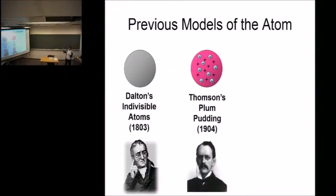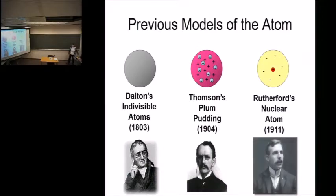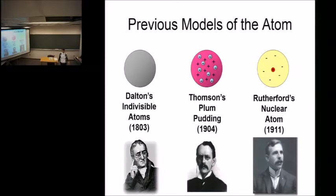Then Rutherford came along to prove or disprove that, and he found there's a positive nucleus. So that's where we left off — there's a positive nucleus in the center, and remember that's really small, like a marble on a 50-yard line and the rest of the stadium. That's where we left the model. The electrons are everywhere else, and we just kind of left it at that. Now we're going to talk about what those electrons are, where they are, and what they're doing.